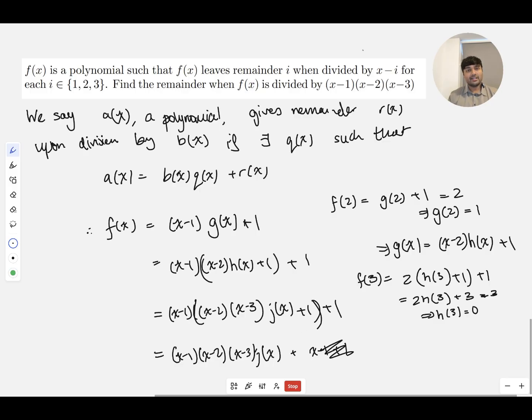And so therefore, the remainder when f of x is divided by (x minus 1)(x minus 2)(x minus 3) is just x. So, and this is a rigorous proof or rigorous derivation to this answer.